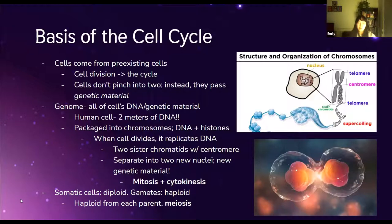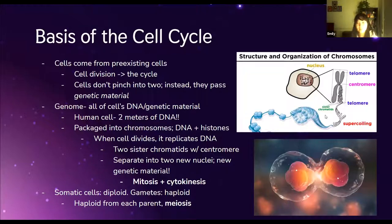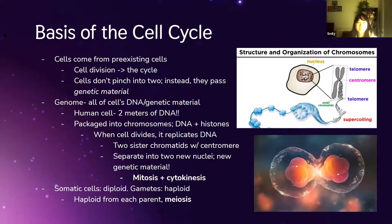Eukaryotes are the ones that have nuclei — 'eu' means true and 'kary' means nut, so the nucleus kind of looks like a nut. Eukaryotes have nuclei, and Alvin makes a good point that there aren't multicellular prokaryotes — they don't have nuclei, they're just single cells. Prokaryotes reproduce through something called binary fission, which we'll look at later. For now we're focusing on the eukaryotic cell, which is why you see the diagram here with 'nucleus' written on it.